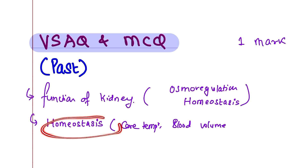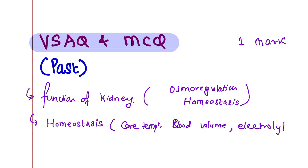Different organs are homeostatic organs. The skin is also a homeostatic organ regulating temperature. The homeostatic parameters include blood volume, electrolytes — sodium, potassium, calcium, bicarbonate — blood pH, blood glucose level, blood urea level, blood CO2, and blood O2. So the definition is: maintenance of the constant internal environment is called homeostasis.